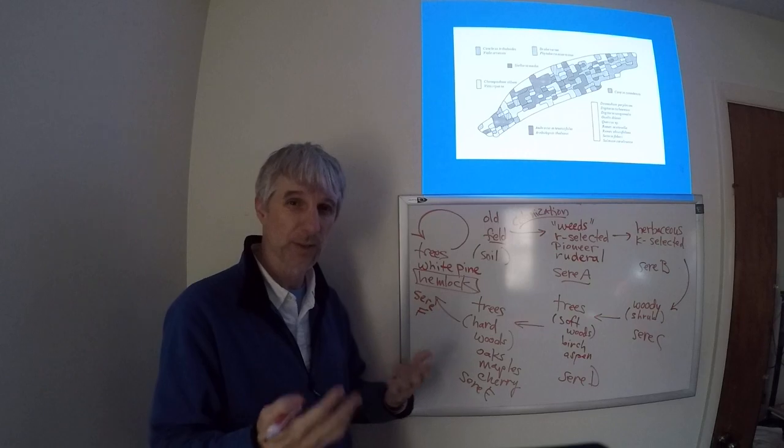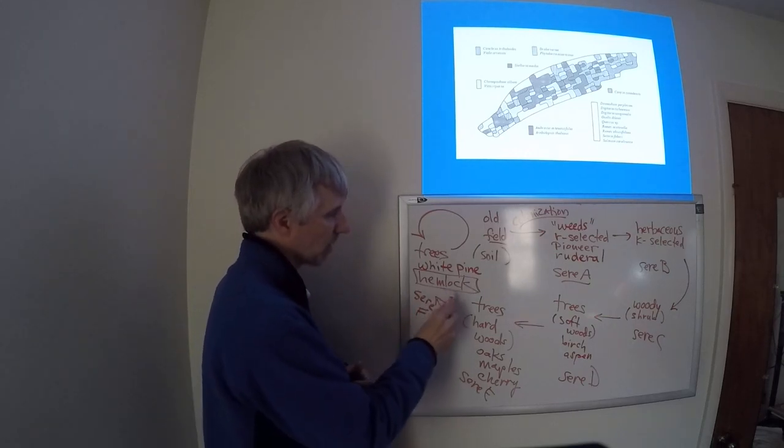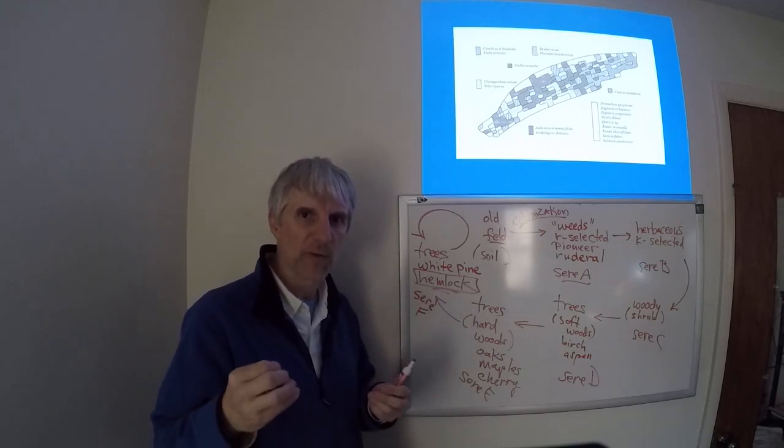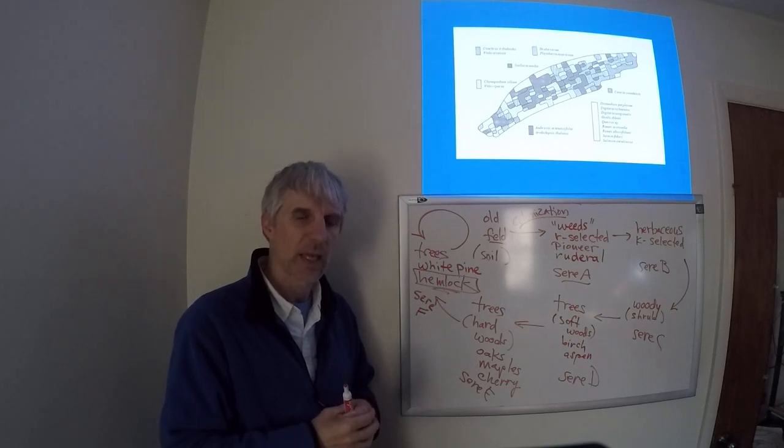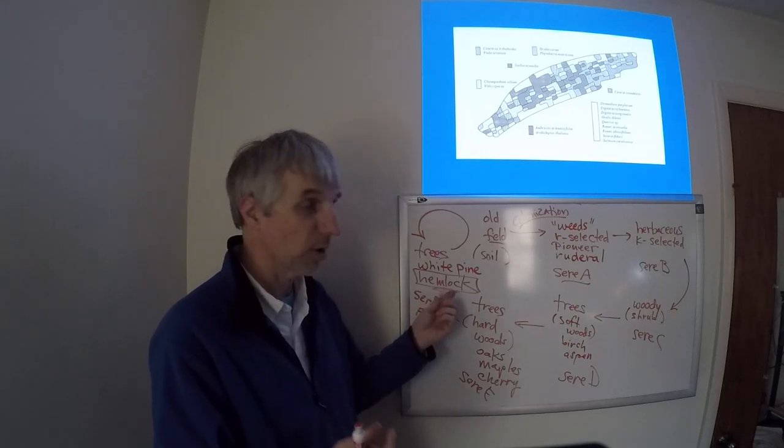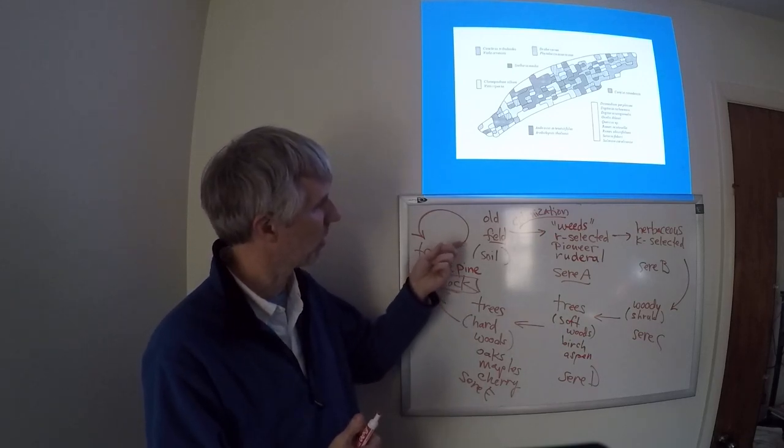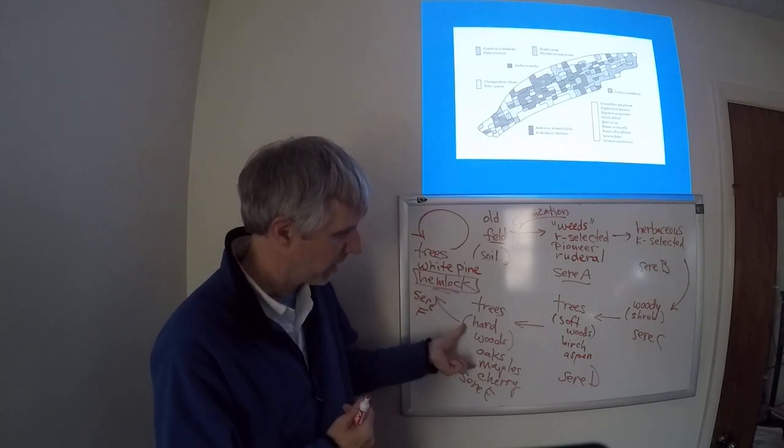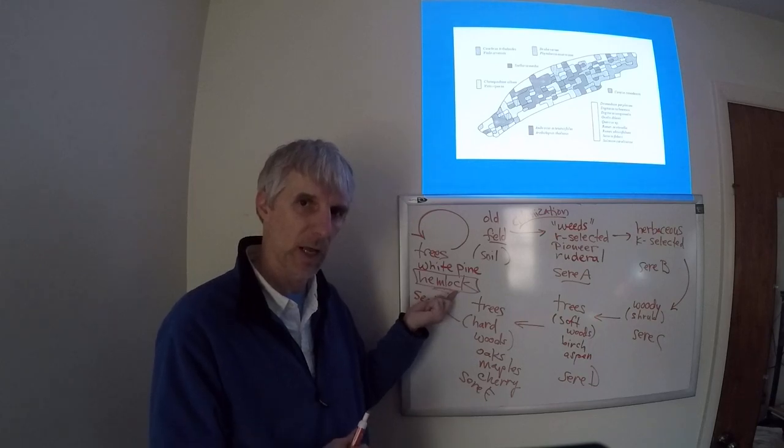And it can be quite dark underneath an established hemlock canopy. The hemlock seedlings require that very dark shading that that established canopy offers. And that allows these to germinate and grow. So the hemlock only establish in the presence of these trees, plus they can establish in the presence of other hemlock.